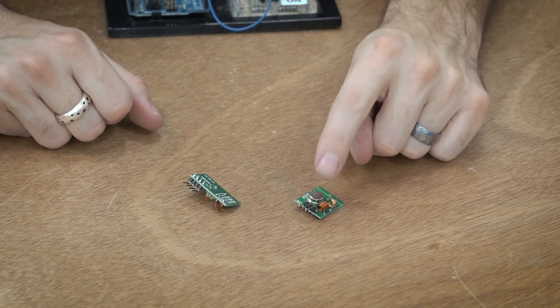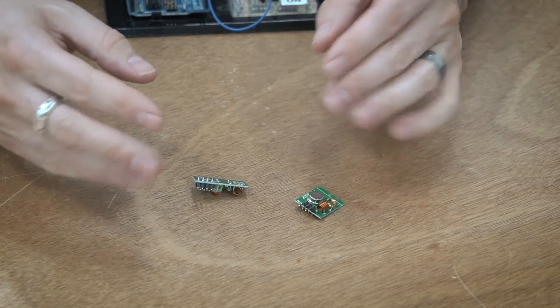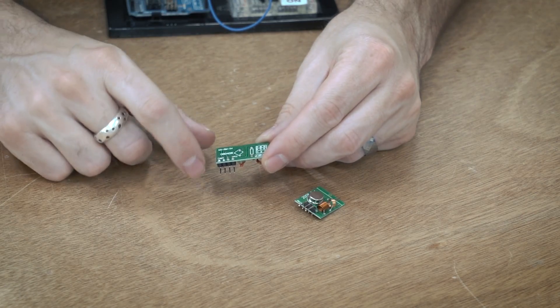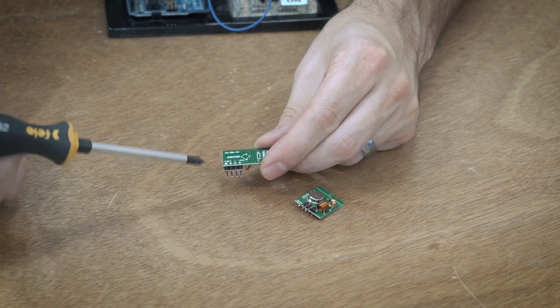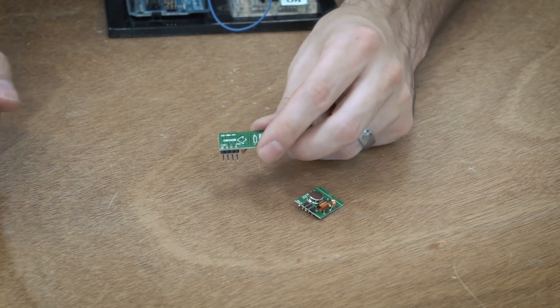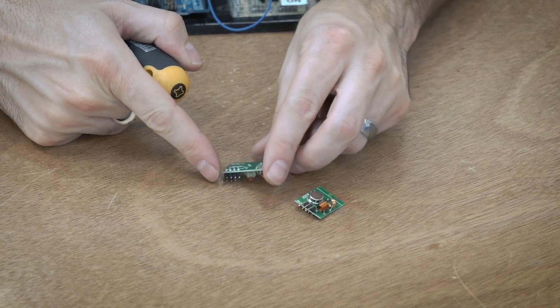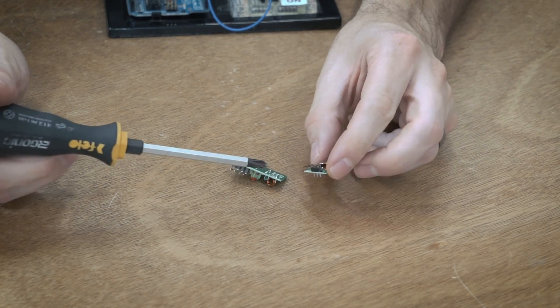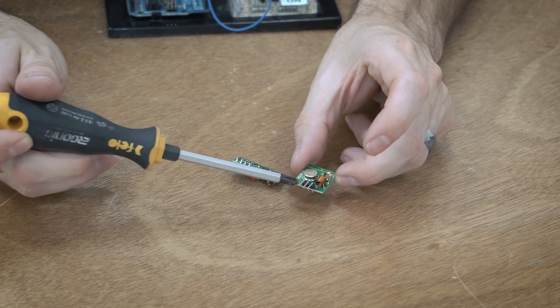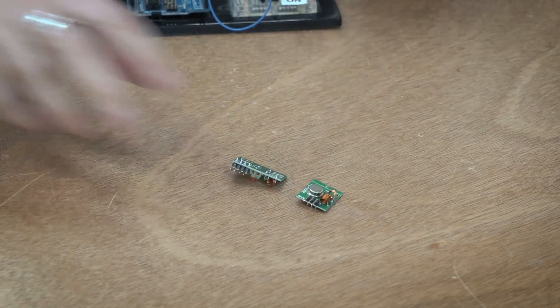You have your send and your receive modules that you get with this little kit, and each one of these has three pins that we care about. There's a ground pin, there is the voltage pin, and there is a data pin. There's actually four pins on the receiver and only three pins on the send module, but we really only care about these three pins.